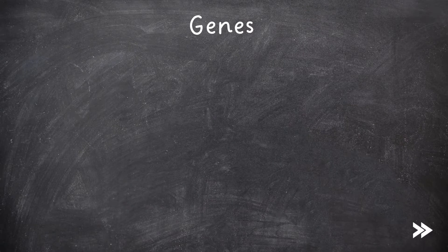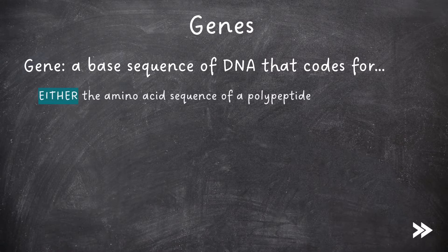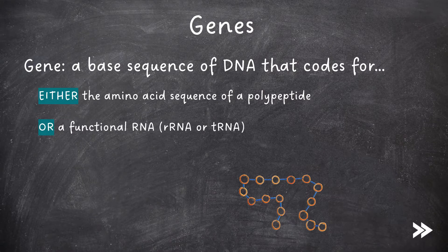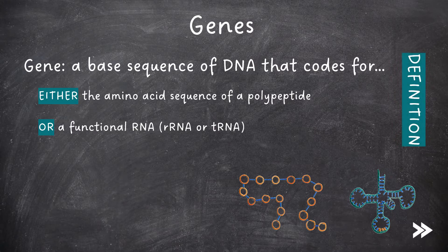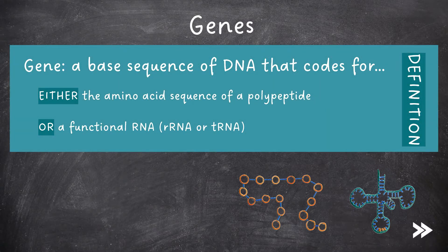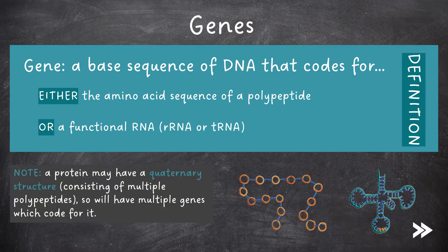Let's move on to genes. A gene is a base sequence of DNA that codes for either the amino acid sequence of a polypeptide or a functional RNA molecule, such as rRNA or tRNA, both of which are involved in protein synthesis. This is your definition for a gene that you'll need to learn off by heart and recall in exams. Note that a protein may have a quaternary structure consisting of multiple polypeptides, so we'll have multiple genes that code for it.